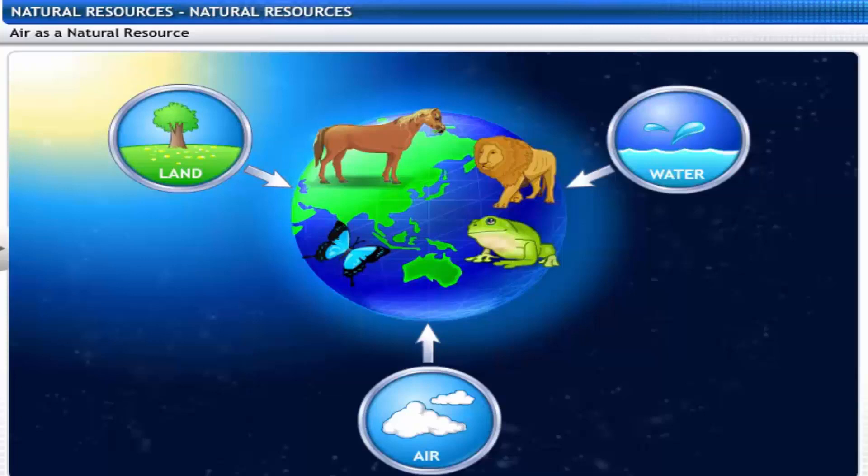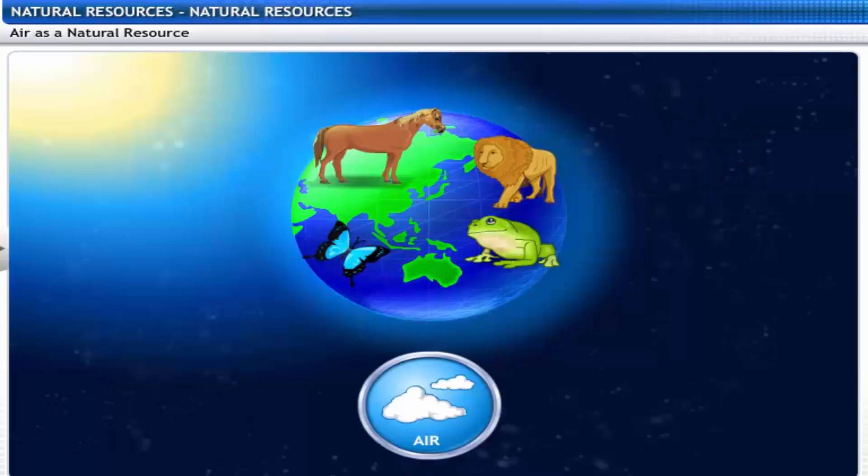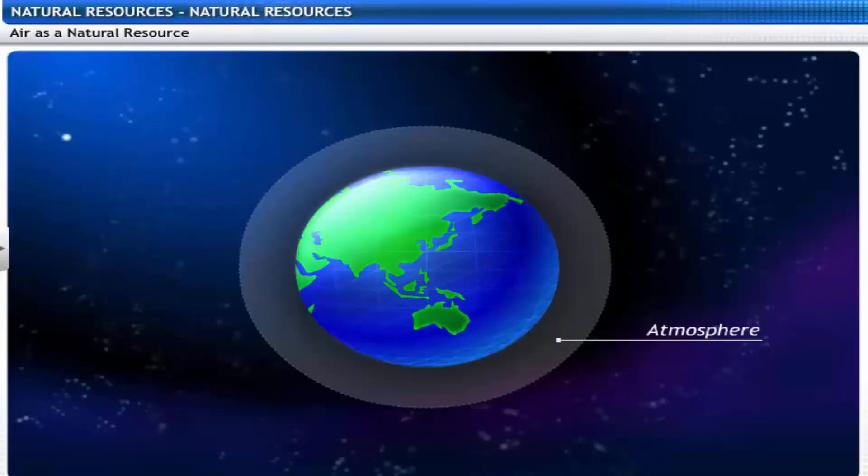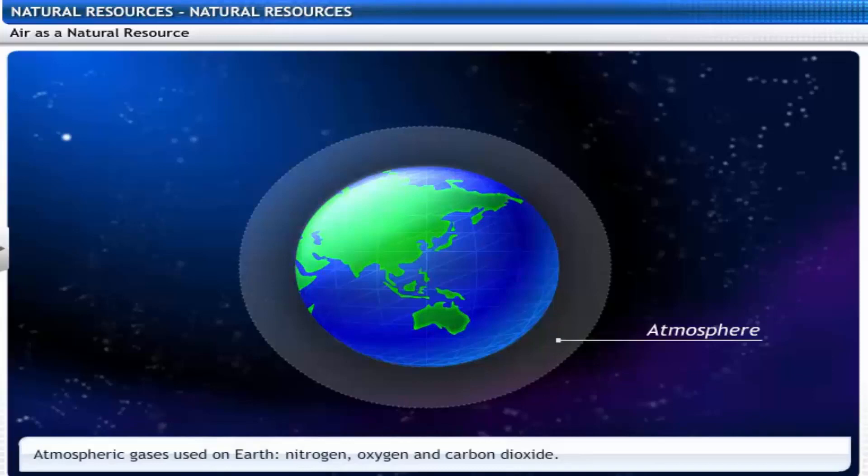Let's look at air as a natural resource. Air is a mixture of gases like nitrogen, oxygen, carbon dioxide and water vapor which support life. Let's now focus on the atmospheric gases that are used on Earth like nitrogen, oxygen and carbon dioxide.